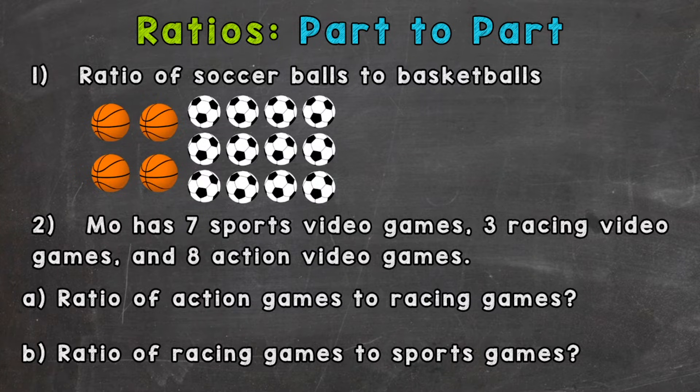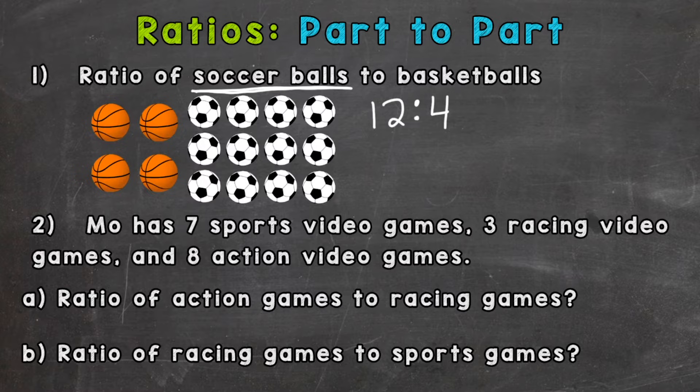They're both part of the whole group of balls, so a part compared to another part. First, order matters for our ratio. So first we need to find how many soccer balls. Well, we have an array of three by four, which would give us 12 soccer balls and 12 to 4 basketballs.